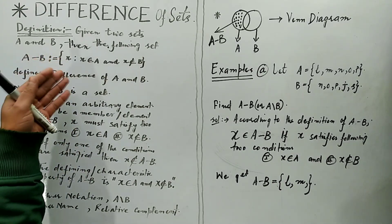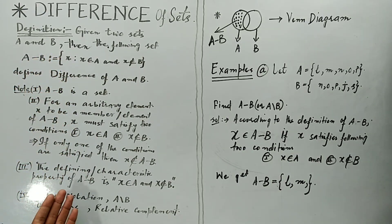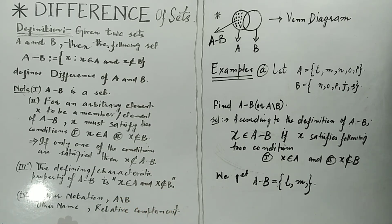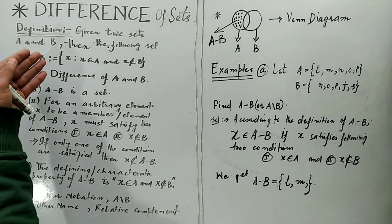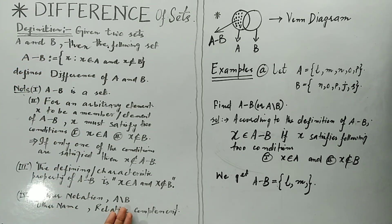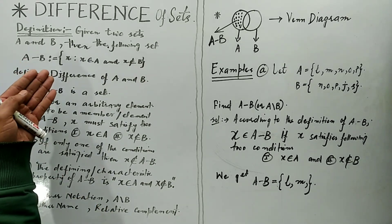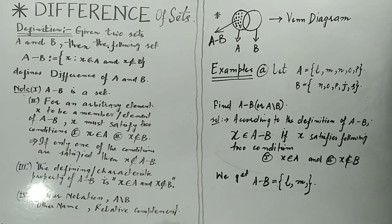For the difference of two sets, the defining or characteristic property is: X belongs to A and X does not belong to B. We also denote this difference using another symbol, read as the relative complement of B with respect to A. This difference of two sets is also known by another name: relative complement.